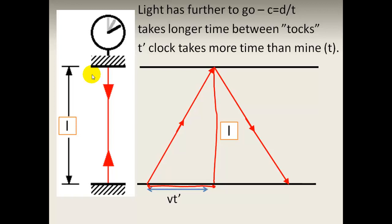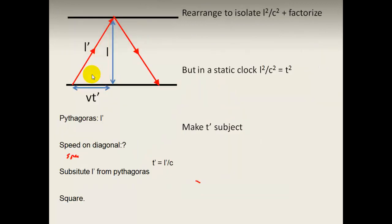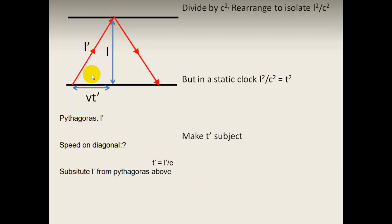So this horizontal distance is VT prime, and the diagonal length is L prime — that's their measurement of what happens in my frame of reference. We are going to use Pythagoras and cancel out any reference to L because we just want it in terms of velocity and time. L prime squared is going to be equal to L squared plus VT prime squared — this is the base of the triangle.